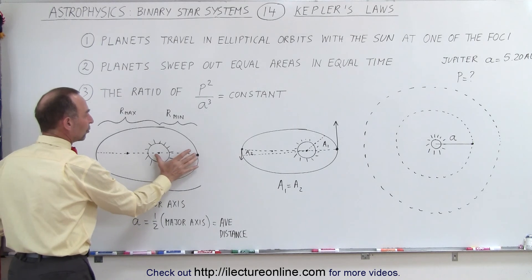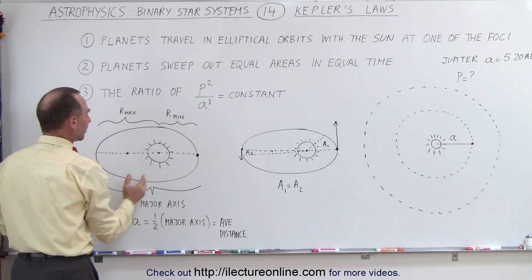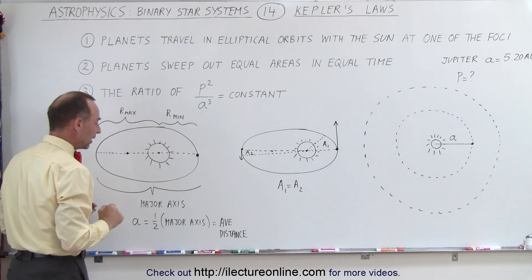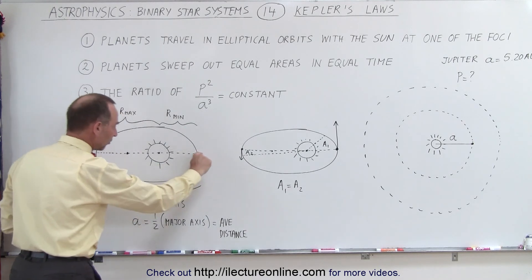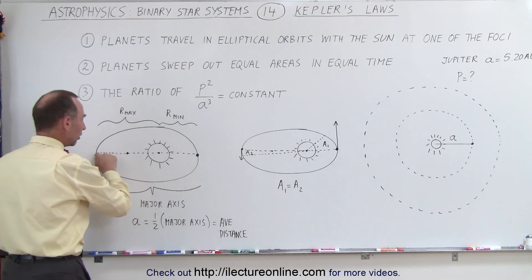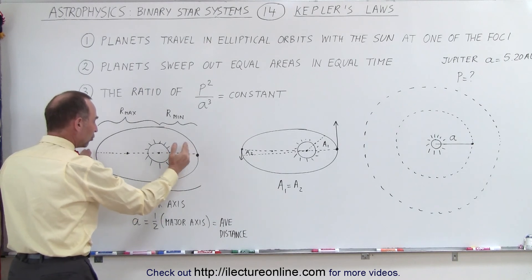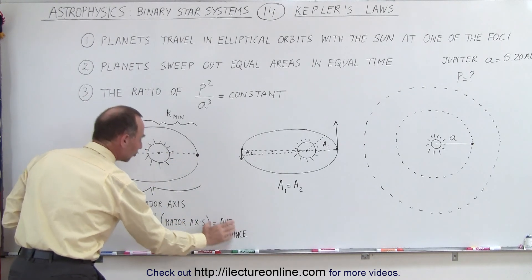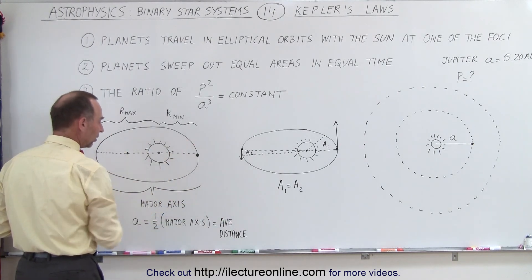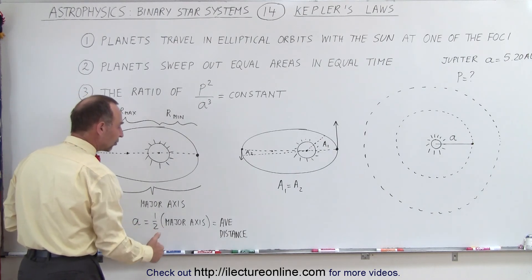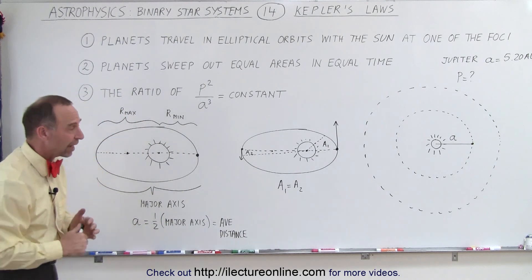At the closest approach, this distance is called the minimum radius. And at the longest approach, this is called the maximum radius. The major axis, the line drawn from one end to the other end, if you then divide it by two, that will become the average distance between the planet and the Sun, which is also known as half of the major axis or the semi-major axis.